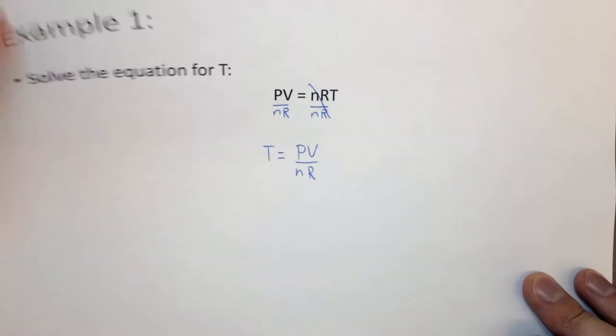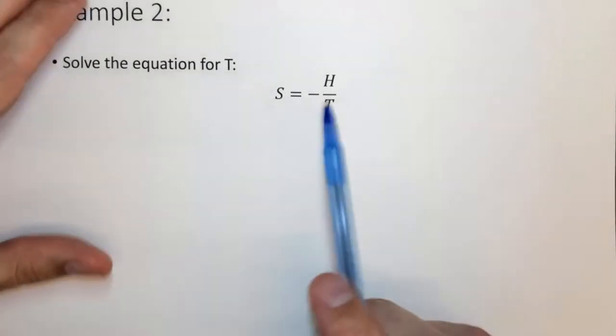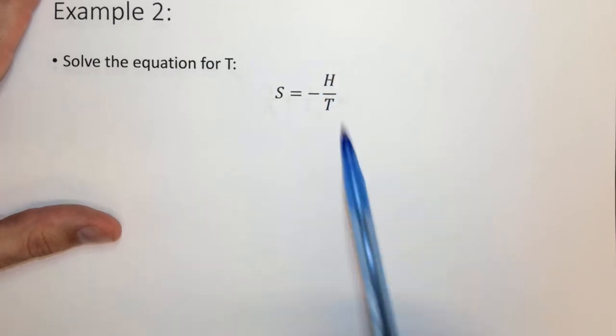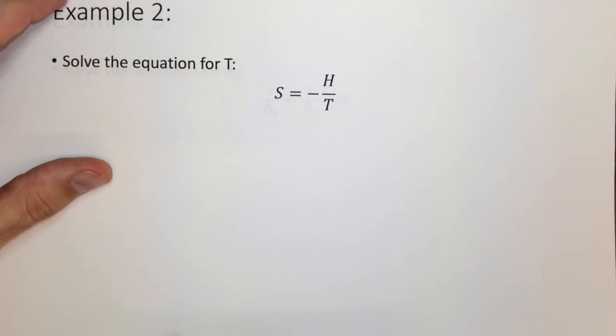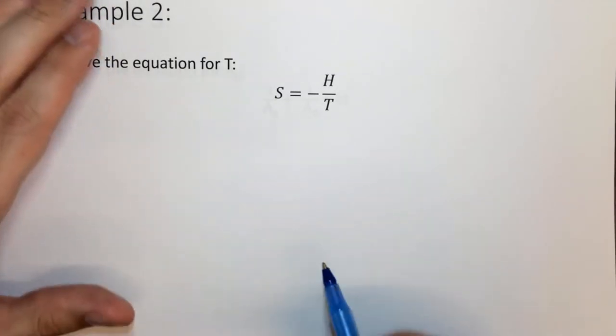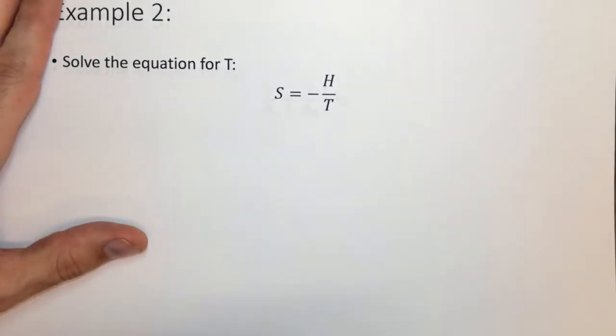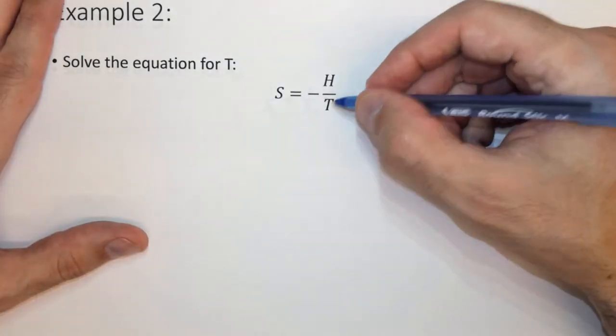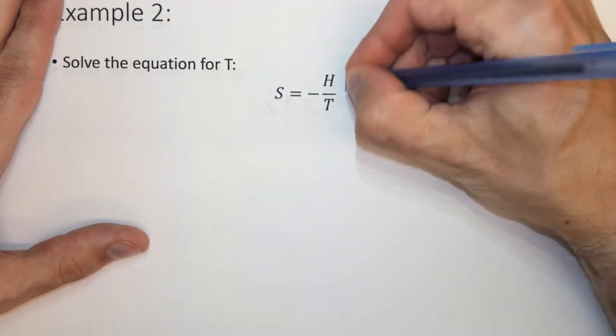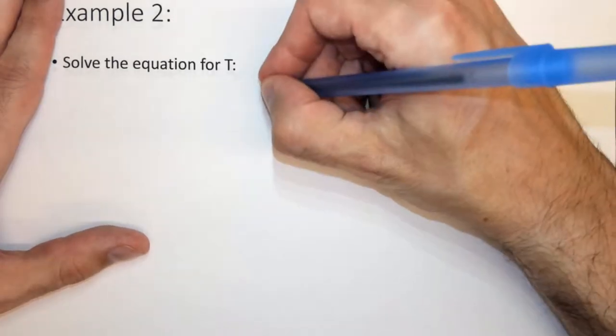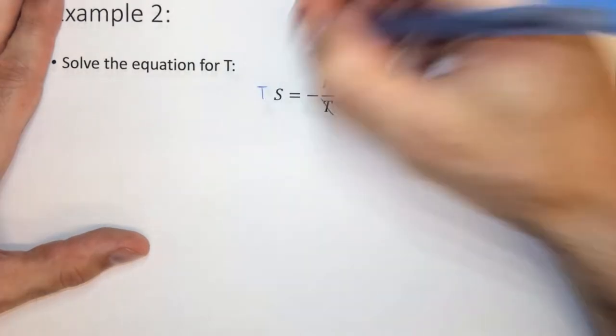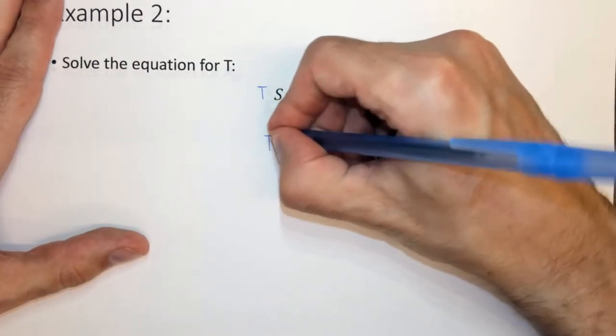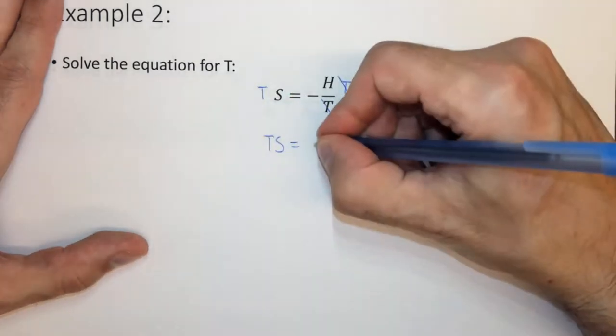Let's look at another example where we have all variables. Here we have S equals negative H over T, and this is a specific case of enthalpy. So we can look at how to solve this one out. So in this case we want to solve for T. So T is on the bottom here, so what I want to do first is multiply both sides by T, just to get it off the bottom. I can do that, and then what I get is TS equals negative H.